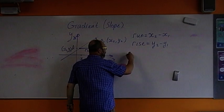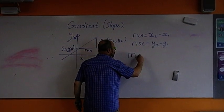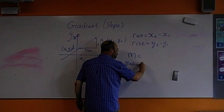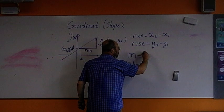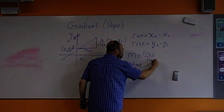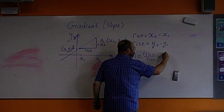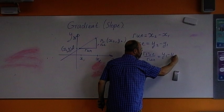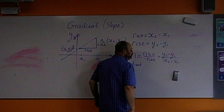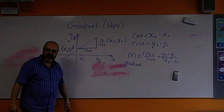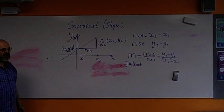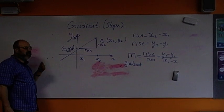and we're using letter M for gradient to denote gradient. Equal rise over run. Or, y2, if you substitute those values, y2 minus y1, over x2 minus x1. That is the definition of the gradient. It's rise over run. It tells us how steep the line is.